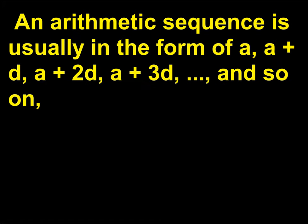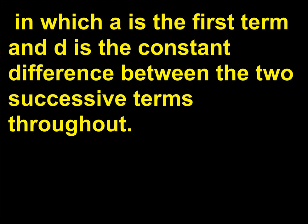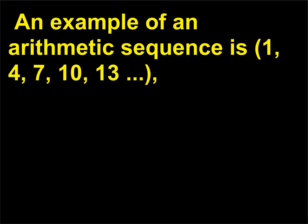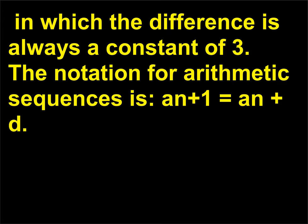An arithmetic sequence is usually in the form a, a+d, a+2d, a+3d, and so on, in which a is the first term and d is the constant difference between two successive terms throughout. An example of an arithmetic sequence is 1, 4, 7, 10, 13, in which the difference is always a constant of 3. The notation for arithmetic sequences is a(n+1) = a(n) + d.